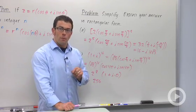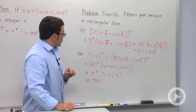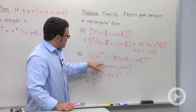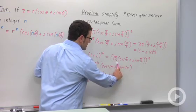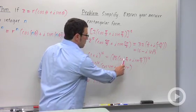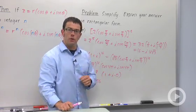Remember, when you're using De Moivre's theorem to raise a complex number to a power, you need the complex number to be in trig form. You want to raise the modulus to the power and multiply the argument by the power.